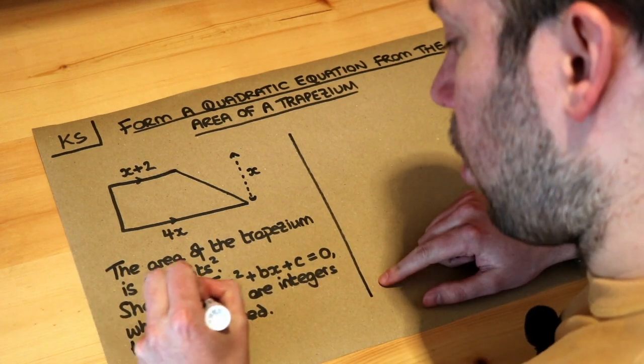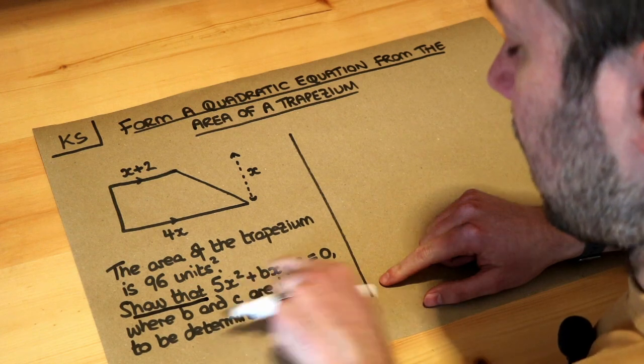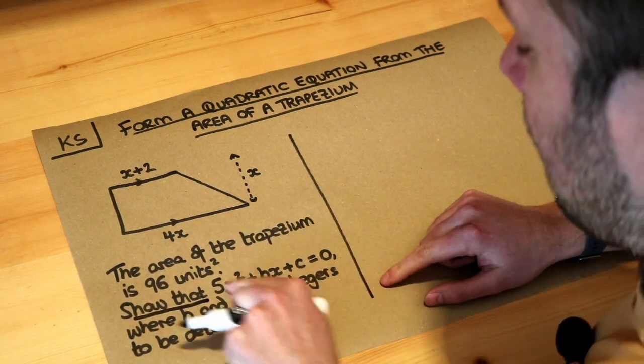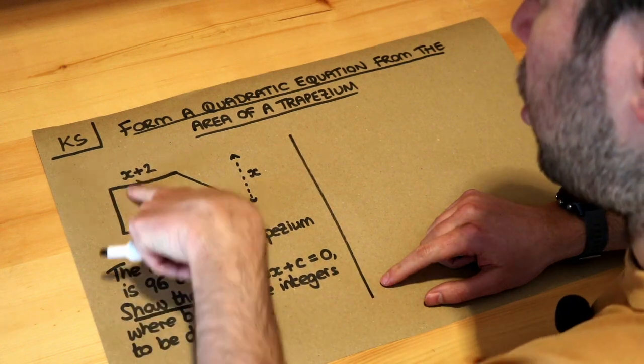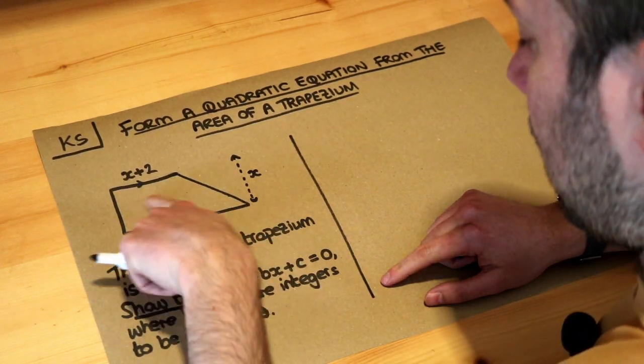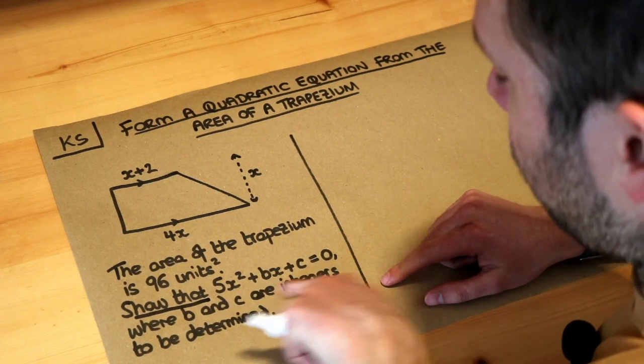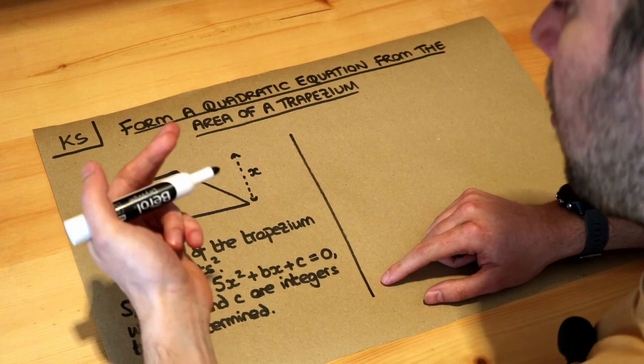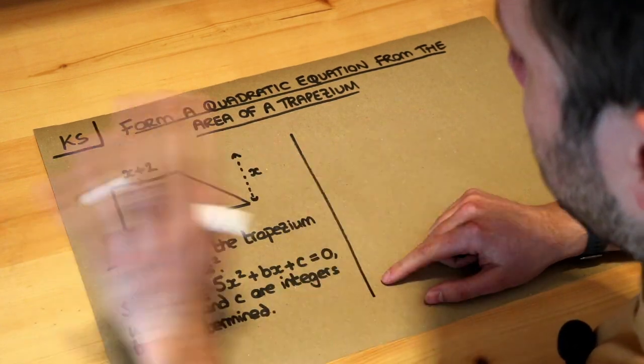Now just a point about show that: when you're trying to show a particular equation, it doesn't mean solve the equation. It doesn't say find the value of x. It basically means we have to use this information combined to form this particular equation. There might be a subsequent part which says solve this equation to find x, but that's not what we're doing here.